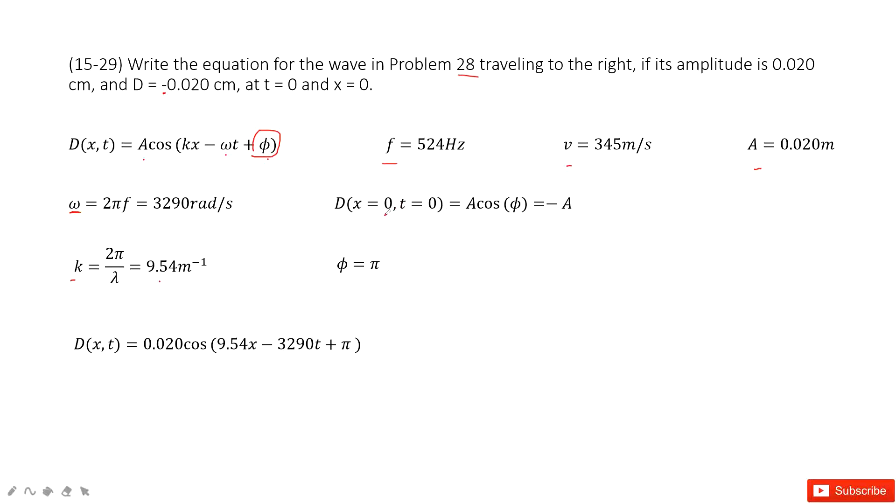And then if we input it inside, we can say this function can be simplified as this one because x is 0, t is 0. So it becomes a cosine phi.